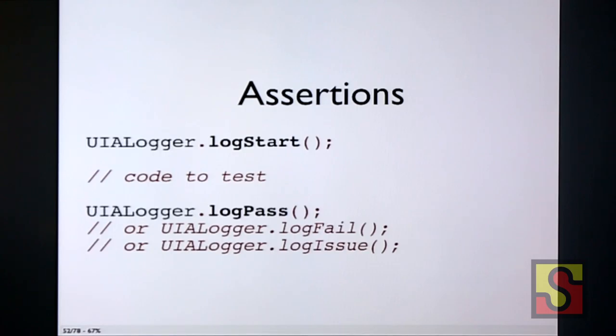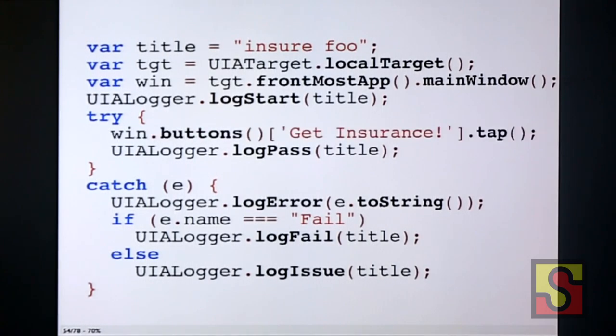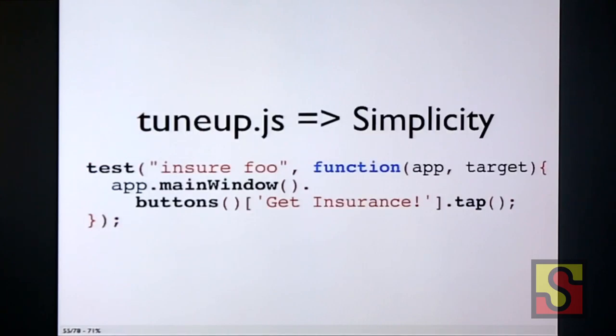In UIAutomation, you can tell it that you're starting a test, and then you do some stuff, and then you finish the test, either with a pass, a failure, or an issue. An issue being that there was an exception thrown. So let's look at an actual implementation of what would it take to actually use these UIA loggers to do a reasonable thing for assertions. It would look something like this. You'd set a title, ensure foo, set a target window, you'd start the test, you'd do some testing, and then at the end of the try block, you'd call a pass, and you'd catch any exception. Those exceptions might be failures or issues, and you'd check that.